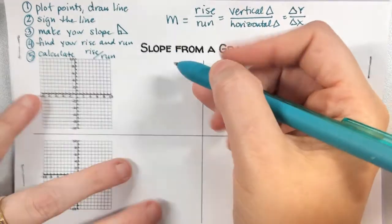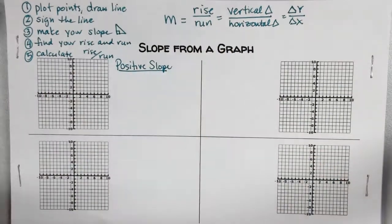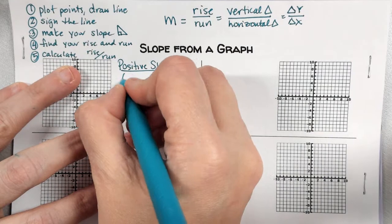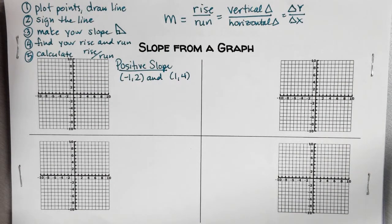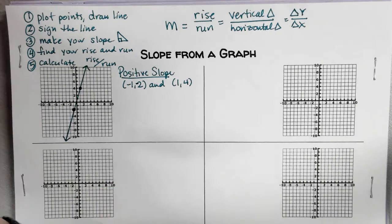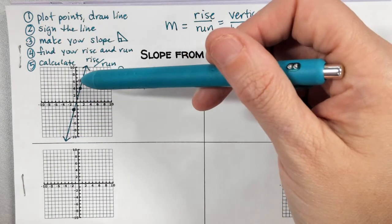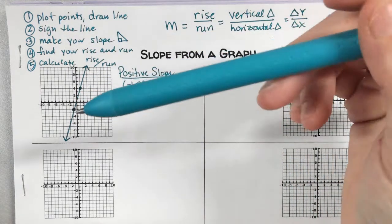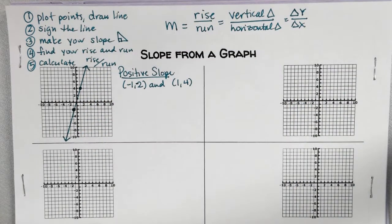So let's start. I'm going to give you two points — we're starting with positive slope. I want you to plot negative one, negative two and one, four. When you connect the points, make sure you draw the line all the way through the grid, not just connecting the points. Algebra is all about being careful and precise, so plot those points as precisely as you can, and make the line as close to straight as possible.